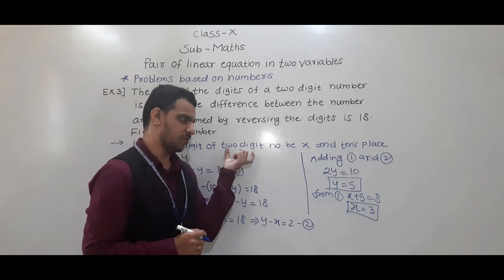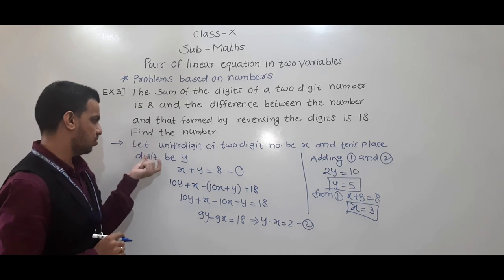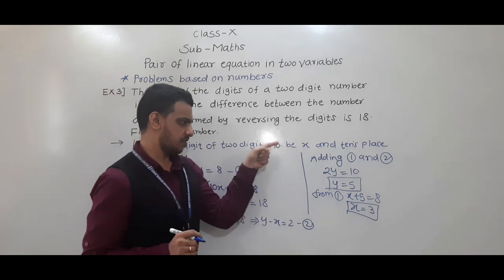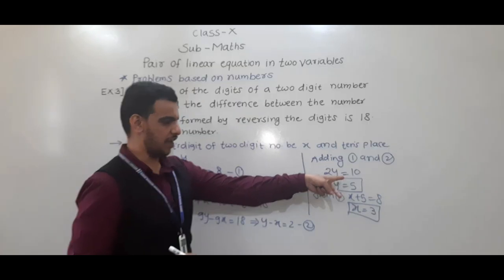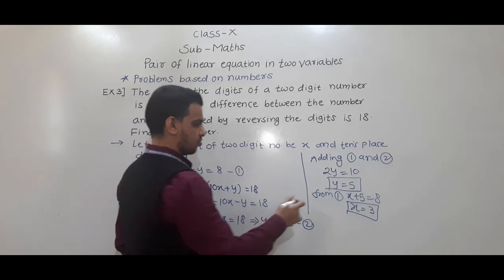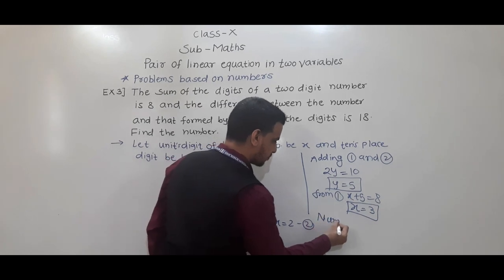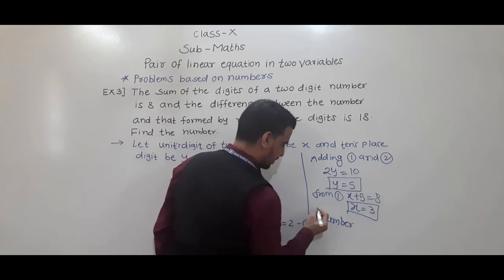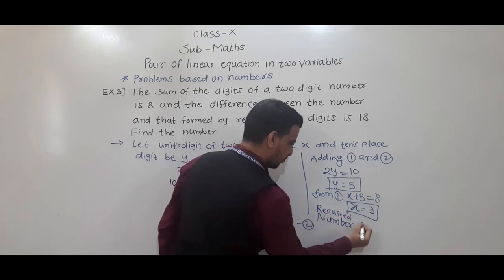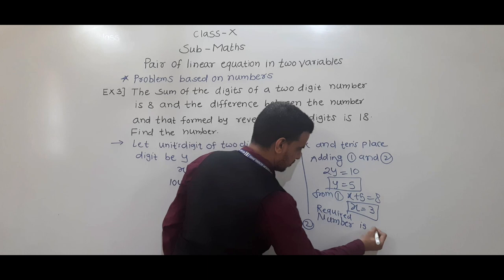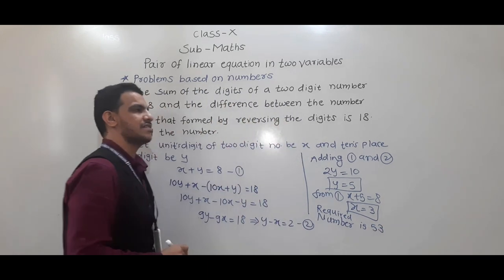So the original number has units digit x equals 3 and tens digit y equals 5. Therefore the required number is 53. Understand this one.